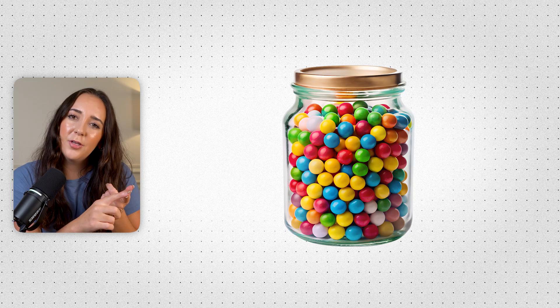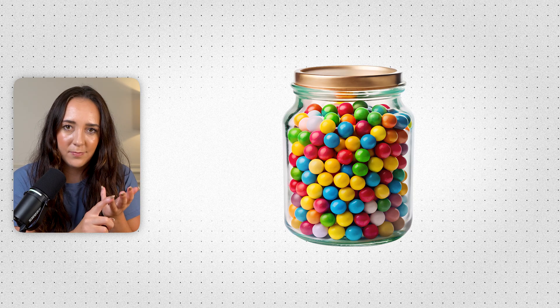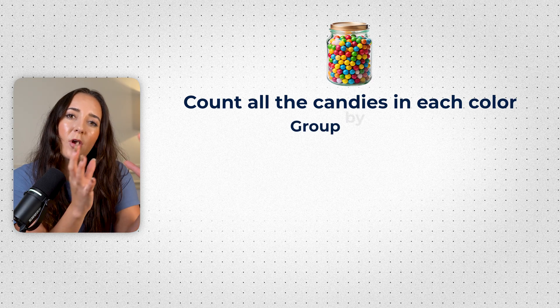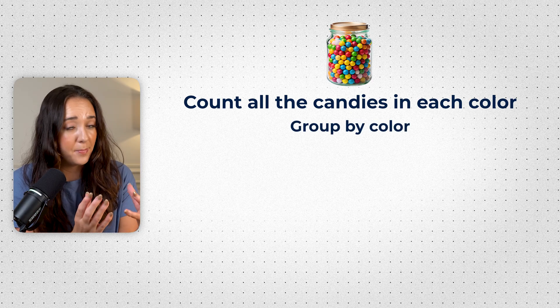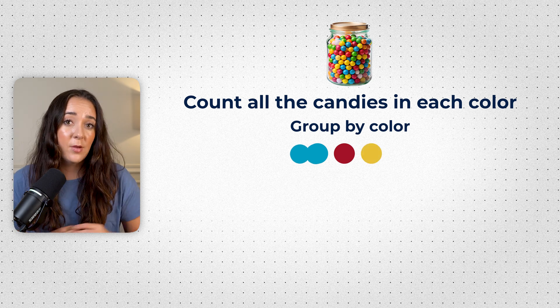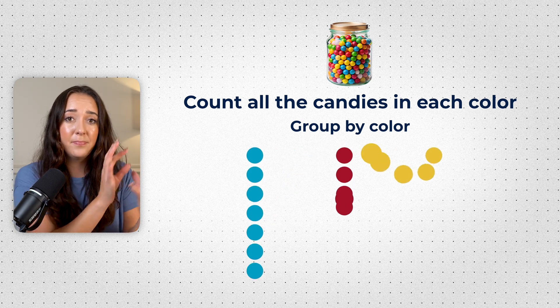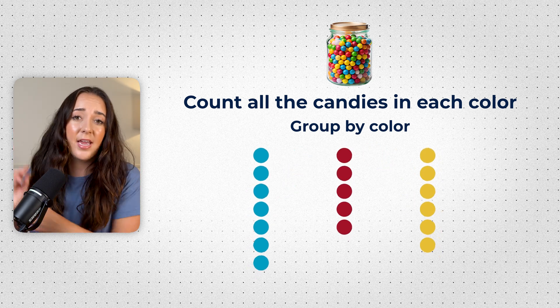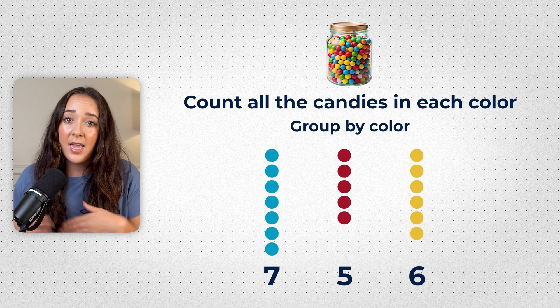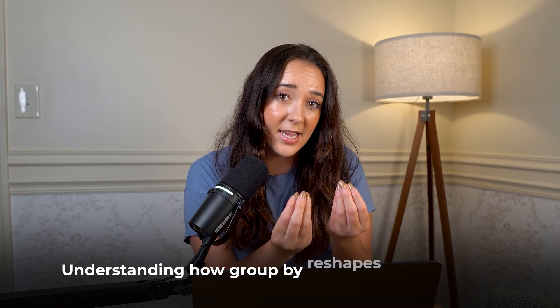Imagine you have a big pile of candies — blue, red, and yellow — and we want to count all the candies in each color. So we group our candies by color: blue, red, and yellow. Then we count them up for each color, and in our output we're going to have a count for blue, a count for red, and a count for yellow. We do the exact same thing with our data.